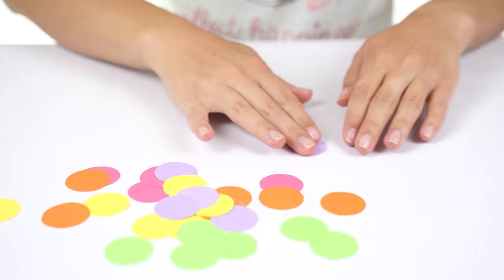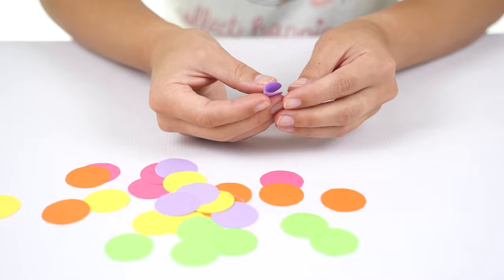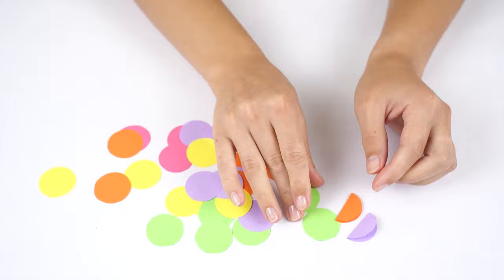Then, start folding each circle into half. When done, start lining your fish body with the half circles, also known as scales.